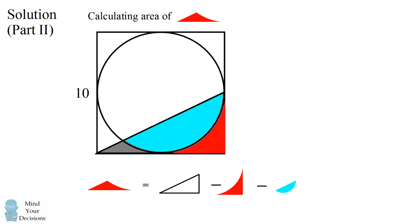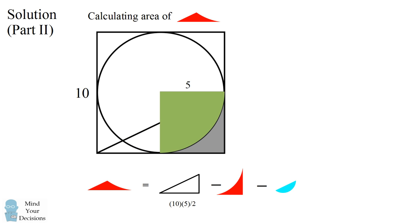The area of the right triangle is its base times its height divided by 2. This right triangle has a height of 5, so its area will be 10 times 5 divided by 2. What about the piece in the lower right-hand corner? We can solve this by subtraction — we'll consider one quarter of the square. This square has a side length of 5. We then subtract out one quarter of the circle. So we solve for this piece by taking one quarter of the square and subtracting out one quarter of the circle.